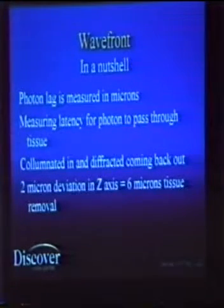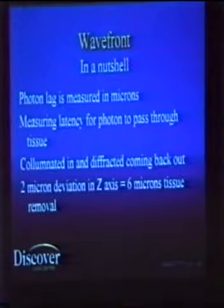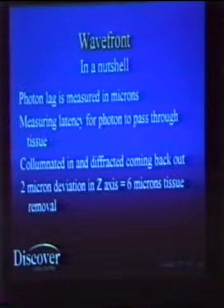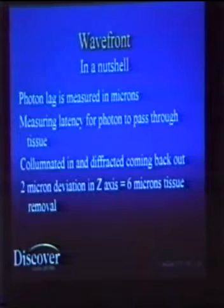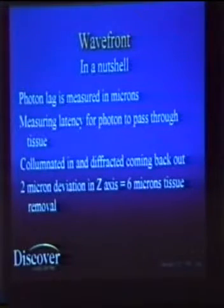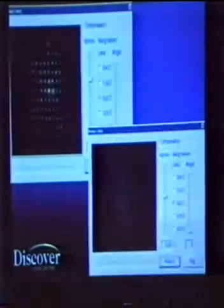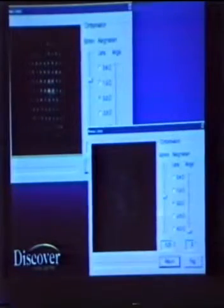Anytime we look at a wavefront map, we need to look at the latency of the photon, which will be color-coded. Blue will be behind, and red will be ahead of the average wavefront from the WaveScan unit.